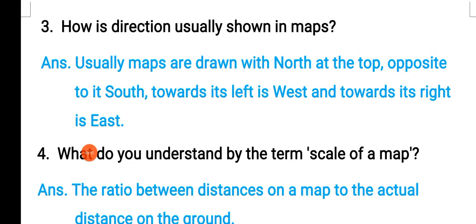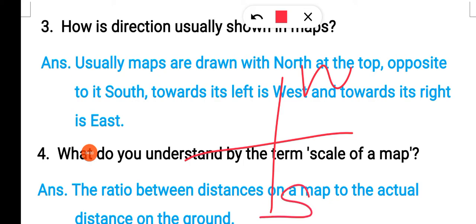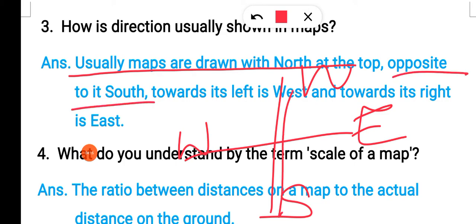How is the direction usually shown in the map? North is at the top, south at the bottom opposite of north, towards left we have west, towards right we have east. Usually maps are drawn with north at the top, south opposite, left as west and right as east.